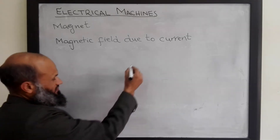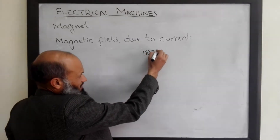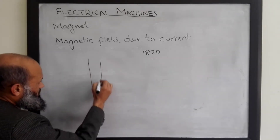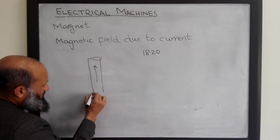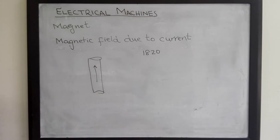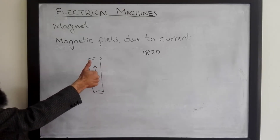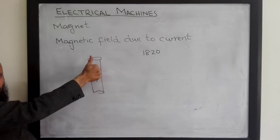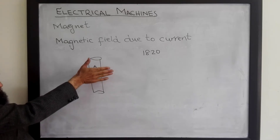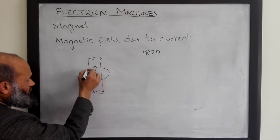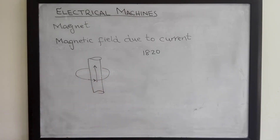There is another phenomenon related to magnetic fields. It was observed by the scientist Oersted in 1820 that a magnetic field is produced around a current-carrying conductor. If a current is flowing in a conductor, a magnetic field will be produced around it. The polarity of the magnetic field can be determined by the grip rule or the right-hand rule: if we grip the conductor with the thumb pointing in the direction of current, then the fingers will indicate the direction of the magnetic lines of flux.